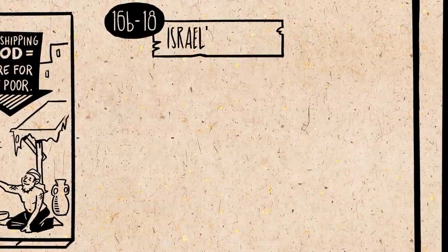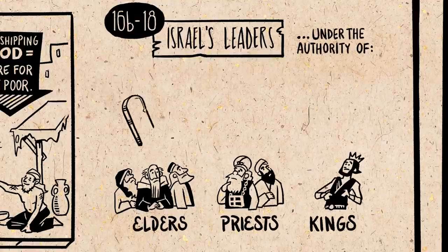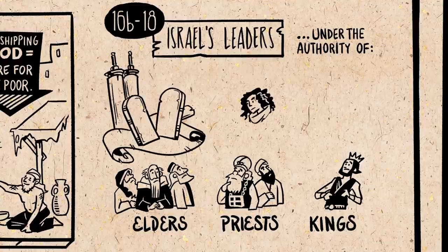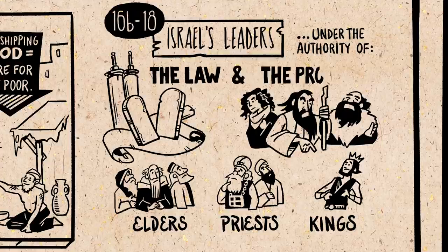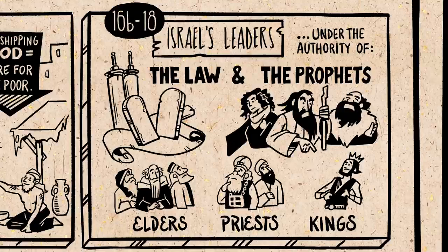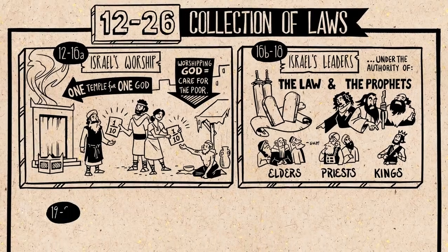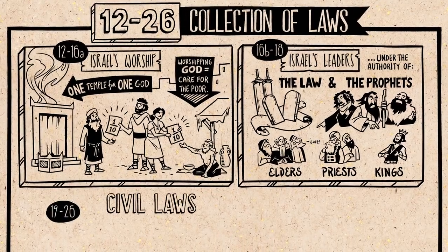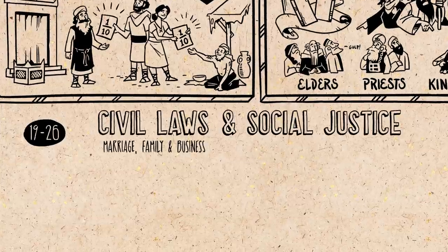The next section outlines the character qualities of Israel's leaders — the elders, the priests, the kings — these were all placed under the authority of the covenant laws, which God said he would enforce by sending prophets to keep the leaders accountable. So in contrast to Israel's neighbors, where kings were thought of as divine and a law unto themselves, Israel's leaders were subordinate to the law and the prophets. Following this is a large section of laws about Israel's civil life: rules about marriage and family and business, and also about social justice, about their legal system and how it was to protect widows and orphans and immigrants.